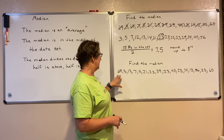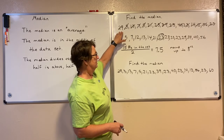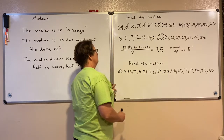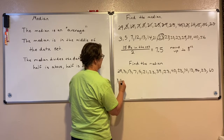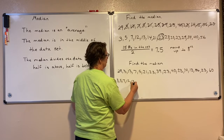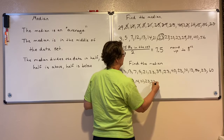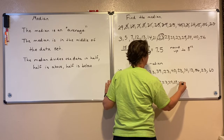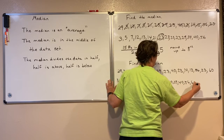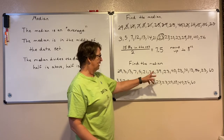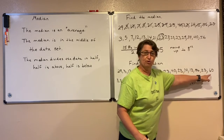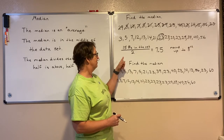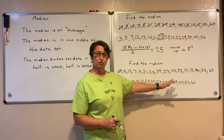Here's another example. This data set is identical to that data set — the only difference is that we've got one extra number. I'm going to rewrite that data set in order, because the first thing we do when finding the median is we put our numbers in order from lowest to highest or highest to lowest. We just have one additional number — the 60 has been added. So now instead of having 15 numbers, I now have 16 numbers in the set.